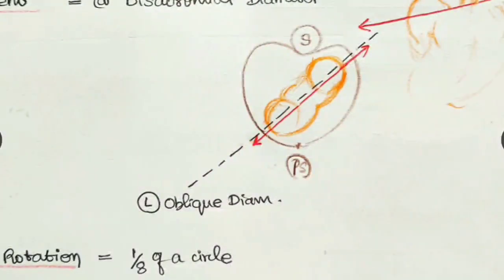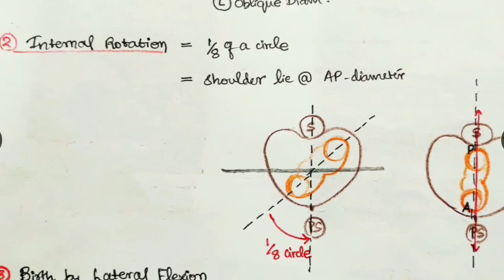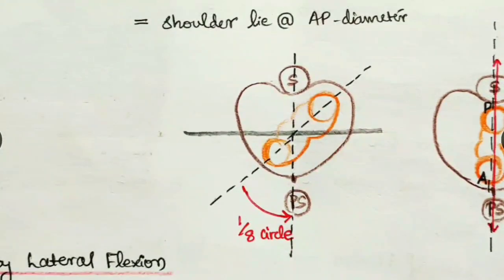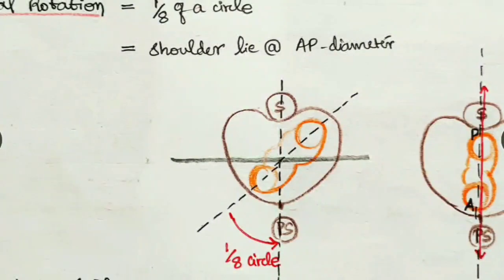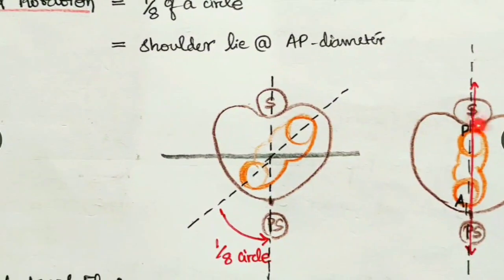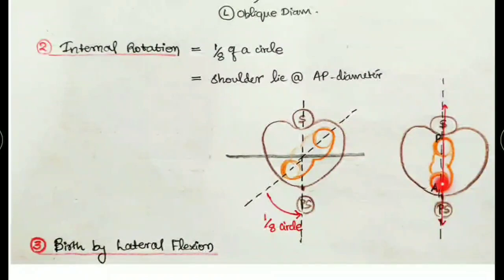The bisacromial diameter also lies in the left oblique diameter - that is engagement. Next is internal rotation: the bisacromial diameter has to align in the AP diameter, so it rotates one-eighth of the circle in that direction. The anterior shoulder then lies just beneath the pubic symphysis.